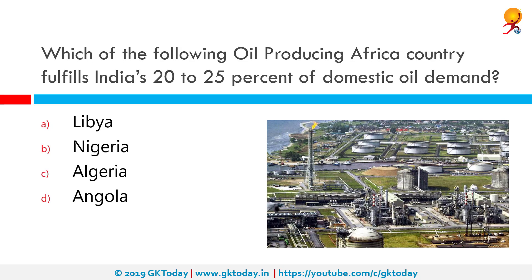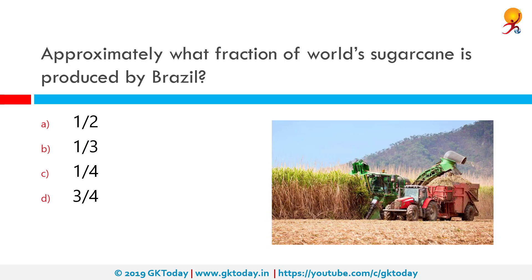Which of the following oil-producing African countries fulfills India's 20 to 25 percent of domestic oil demand? That would be Nigeria. In mid-2001, its crude oil production was averaging around 2 million barrels per day. Nigeria has a total of 159 oil fields and 1,481 wells in operation, according to the Department of Petroleum Resources.